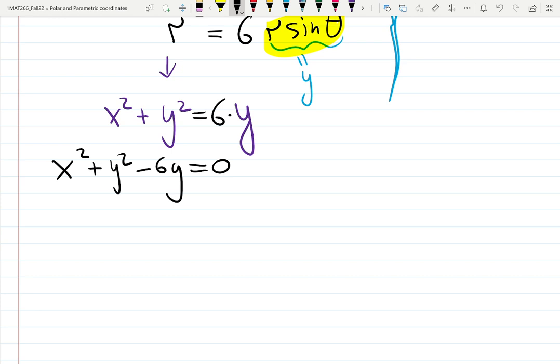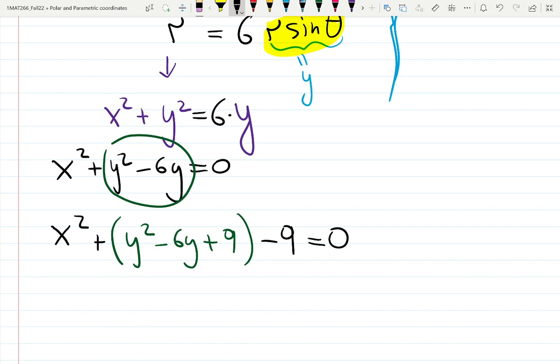x squared plus y squared minus 6y equals 0. Step 2 is your least favorite step. Complete the square. x squared plus. How to create full squared out of y squared minus 6y? y squared minus 6y plus 9. People are like, where did 9 come from? Minus 9 equals 0. I'm trying to create full squared.